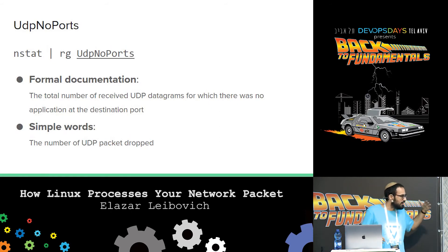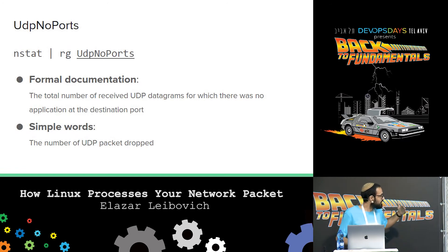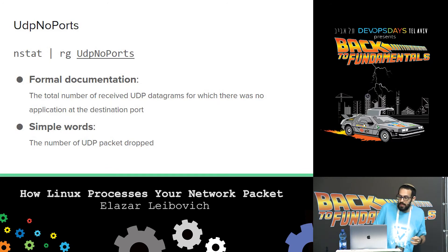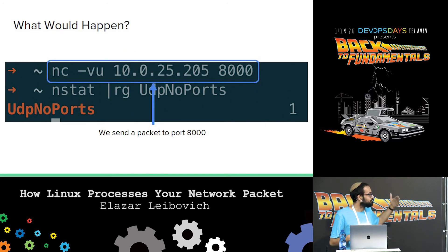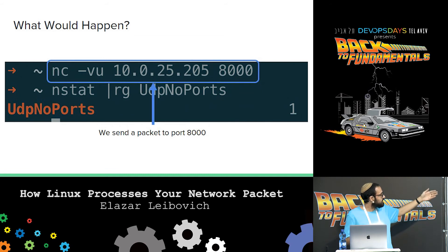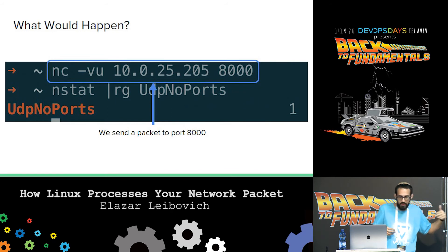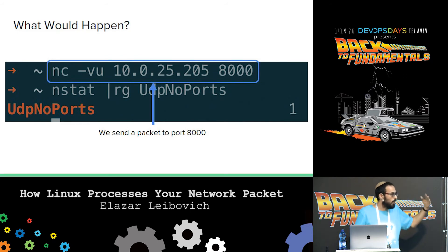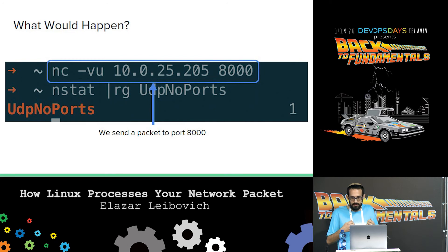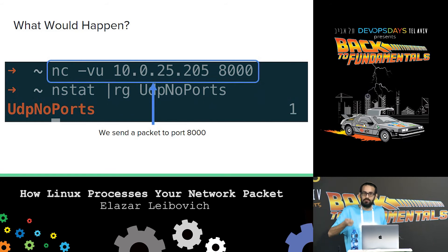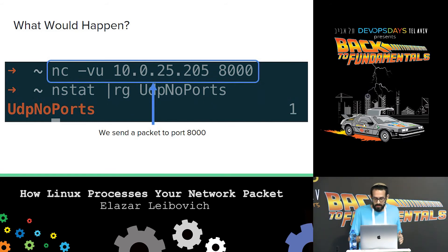You can see the RFC description, but in plain English this is the number of UDP packets the kernel dropped because no application is waiting for them. And that's exactly what would happen to the packet sent by my boss to my IP. We can see that in action: netcat sends a UDP packet to port 8000, we check the UDP no-port counter using netstat — usually installed by default — and you can see the counter is now 1, because the packet was received, the kernel said local delivery, saw no application waiting for this packet, and incremented this counter so we can know a packet was dropped.